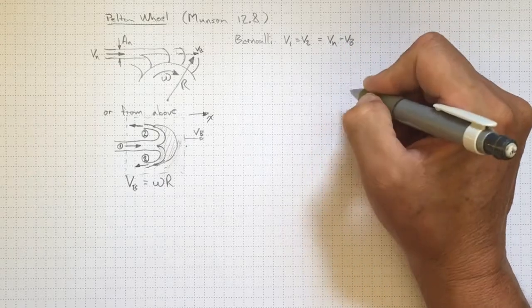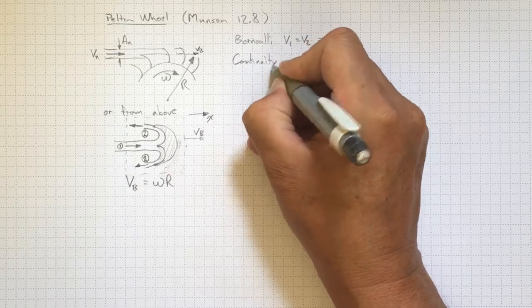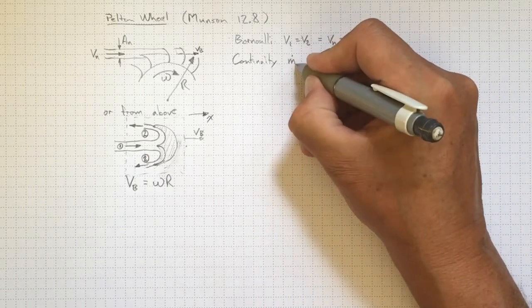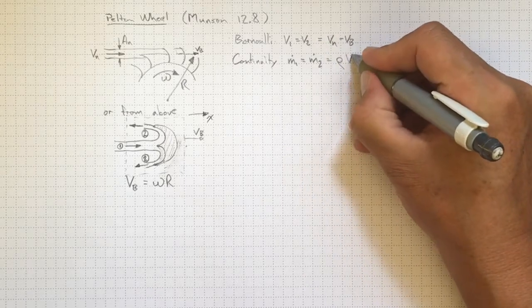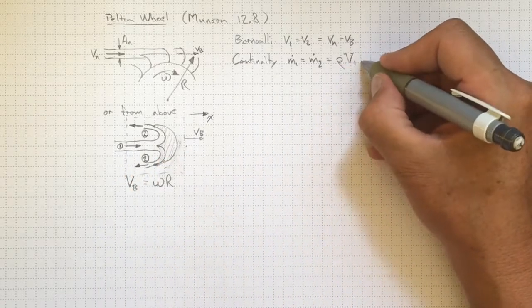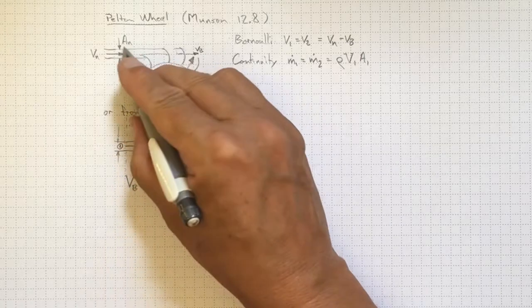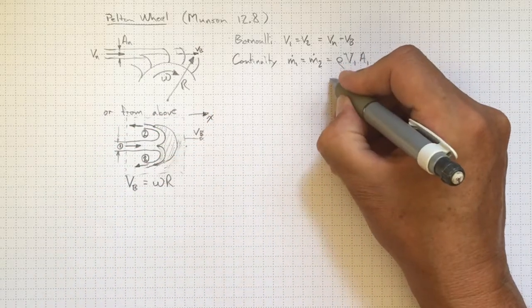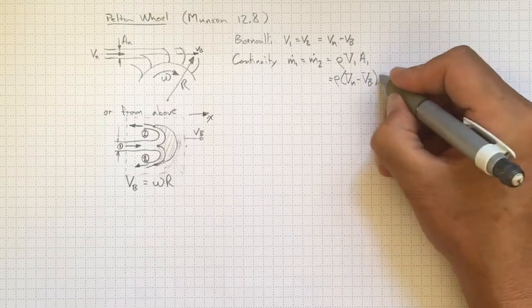We wind up with the relative velocity there, and by continuity — conservation of mass — whatever's coming in is going out, as long as the flow is steady. So m-dot-one equals m-dot-two equals density times the relative velocity coming in at one times the area at one, which is the same as the area of the nozzle. The geometry remains the same, so that equals rho times (v-nozzle minus v-blade) times the area of the nozzle.